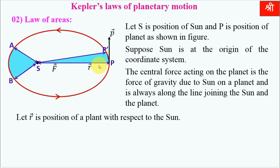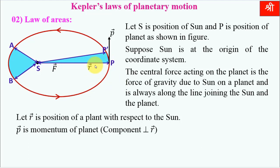The position vector R of the planet gives its position with respect to the sun. This vector is continuously changing as the planet moves. When the planet is at position P-dash, the vector is SP-dash; when at position A, it is directed from S to A. The momentum vector T of the planet has a component perpendicular to vector R. The linear velocity is always tangential to the ellipse, and since the tangent is perpendicular to the radius vector, momentum is perpendicular to the radius vector.